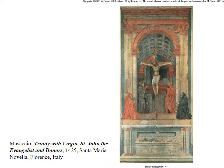Here's Masaccio's Trinity with Virgin, Saint John the Evangelist, and Donors from 1425. Apparently, this was covered up for some time — plaster and another painting were placed over it. It's an irony that this is an icon of art history now, but was lost for some time. Notice that the vanishing point is right at the foot of Christ's feet. You have the coffered barrel-vaulted ceiling painted behind Christ, and the lines lead down to the foot of the cross.